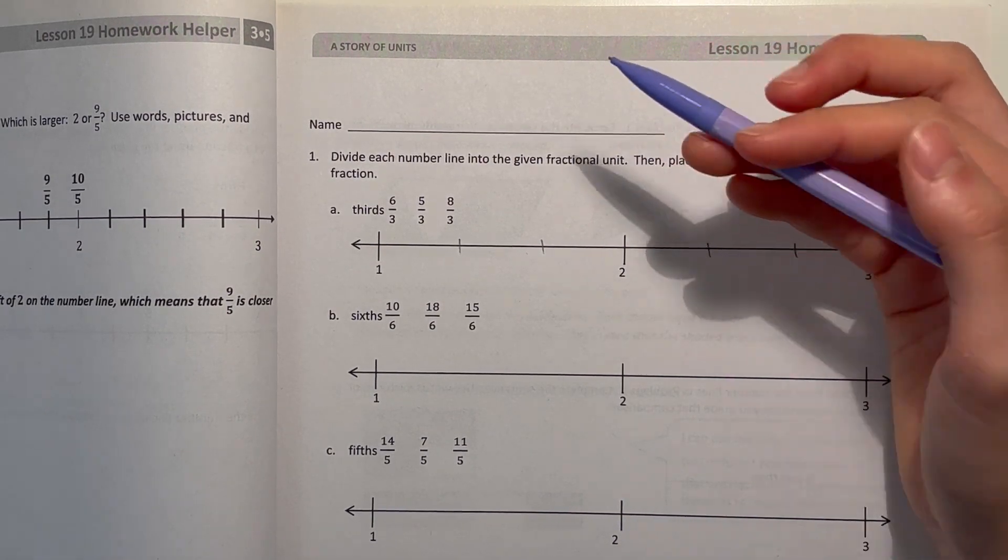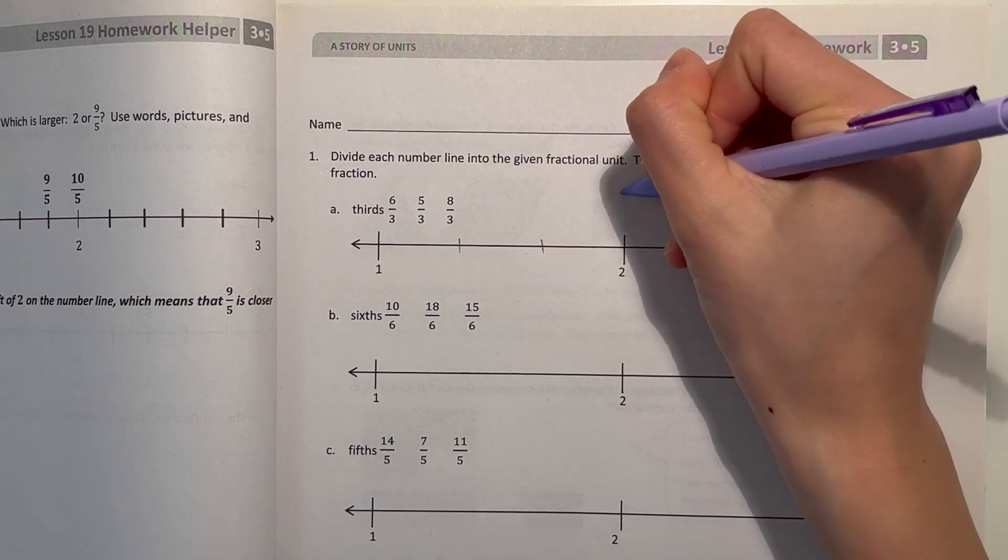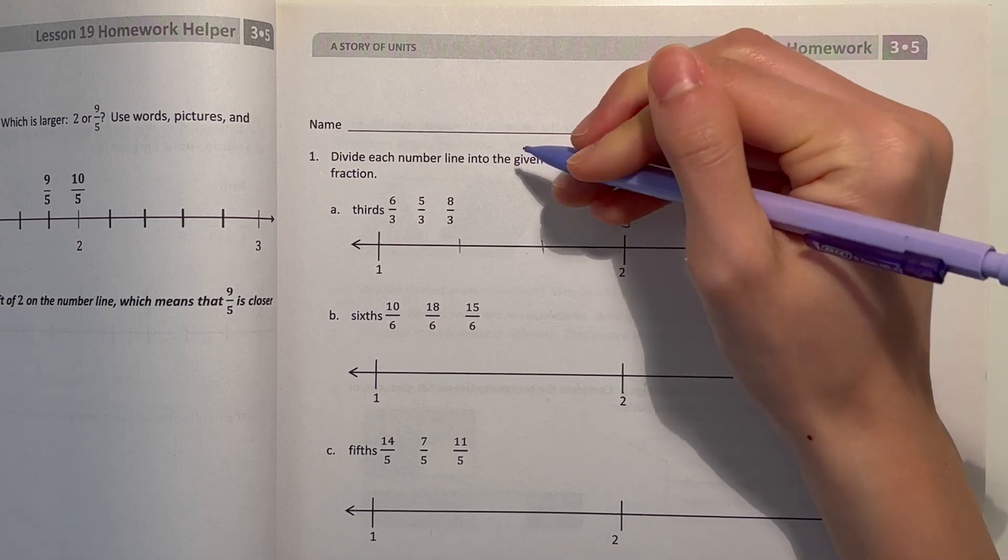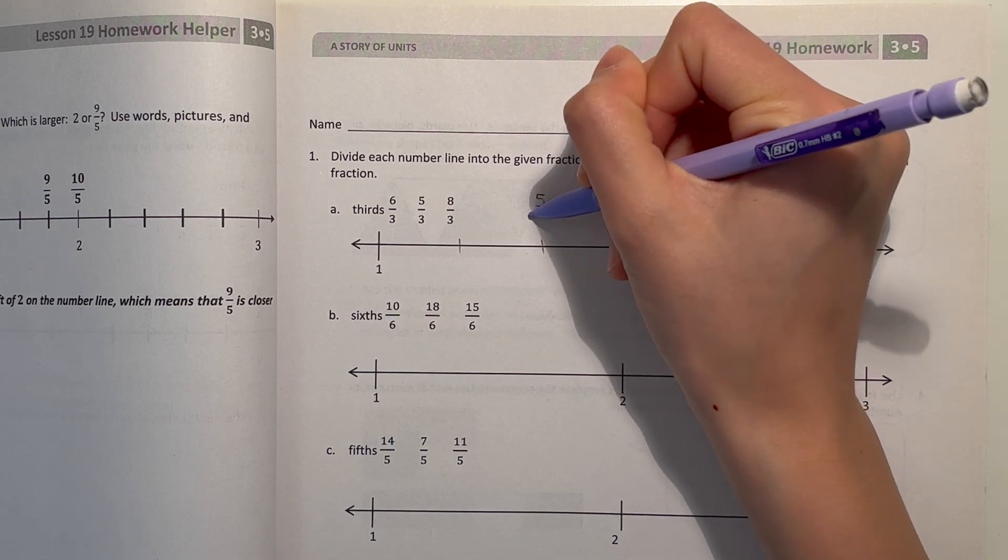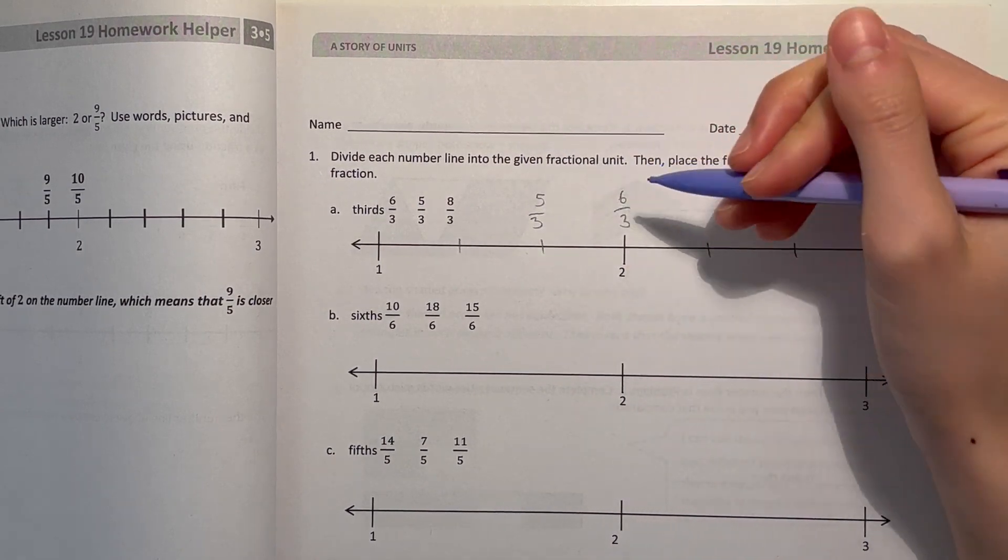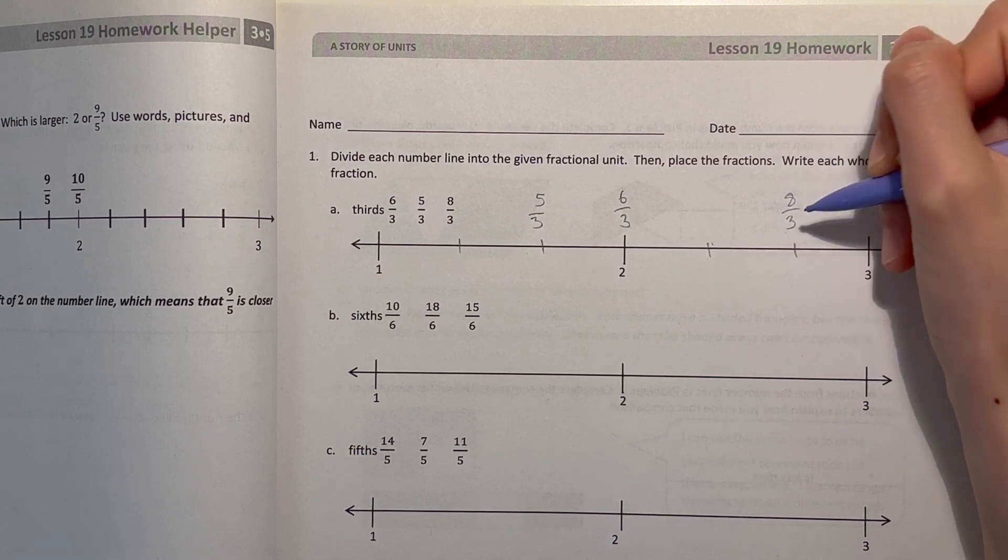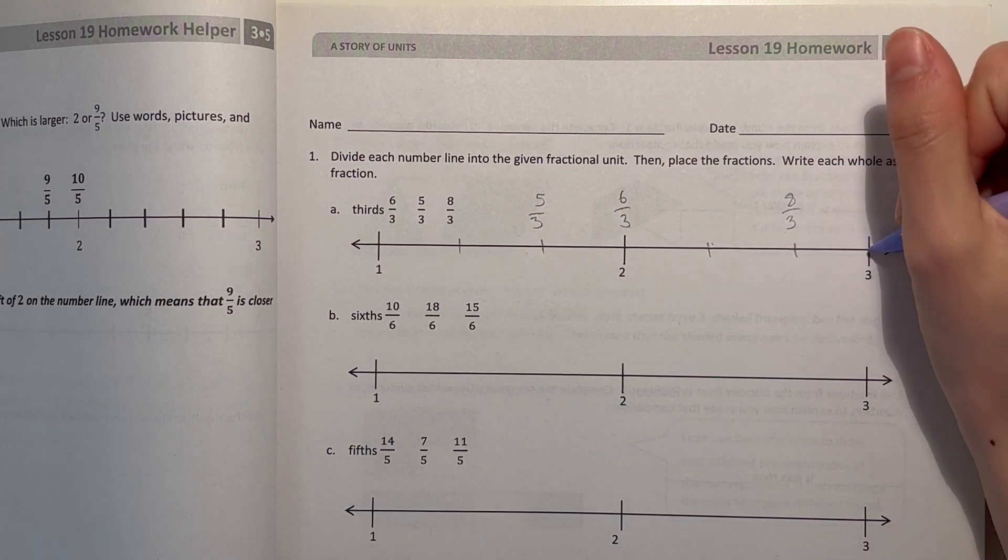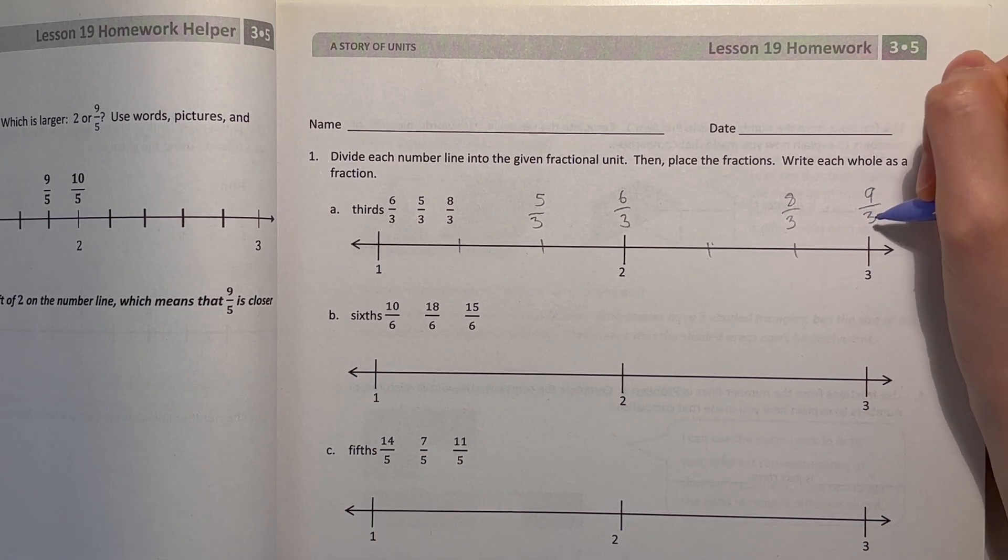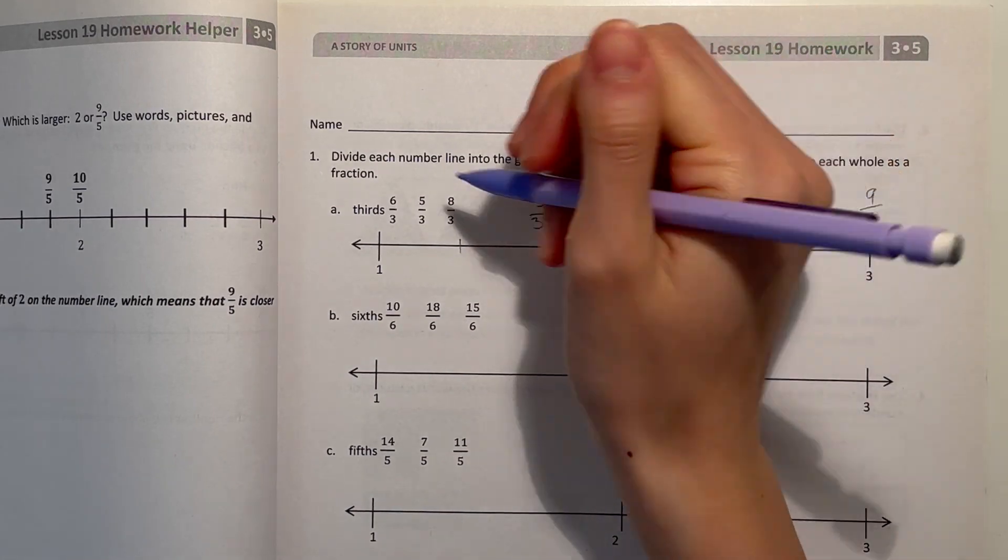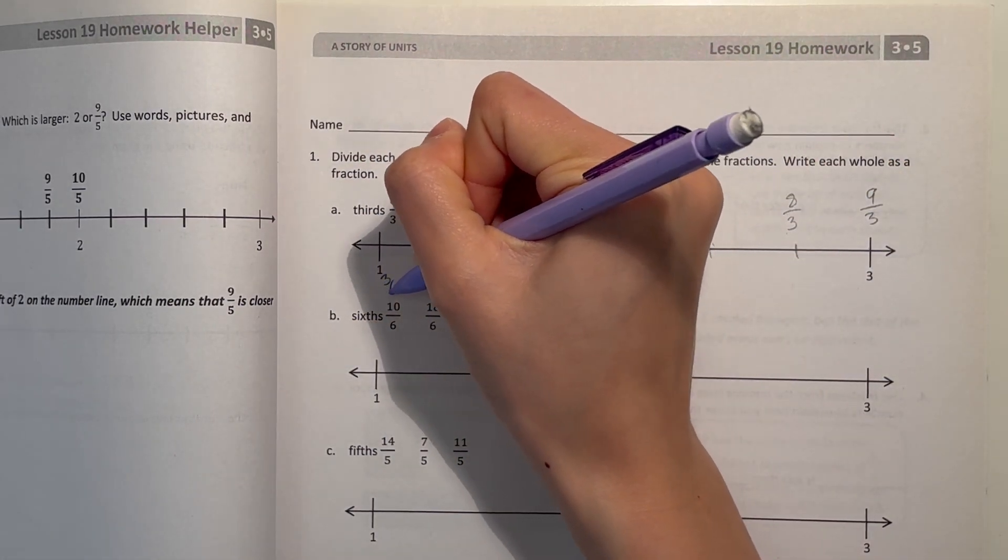So place the fractions, 6 thirds is equal to 2. So that would be right here. 5 thirds is right before 6 thirds. So that would be right here. And 8 thirds, so 6, 7, 8 thirds would be right here. And write each whole as a fraction. 3 thirds, 3 times 3 is 9. So that's 9 thirds for 3. And we already did 2, so whole is just 3 thirds right here.